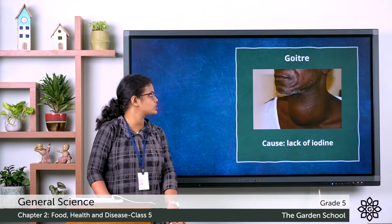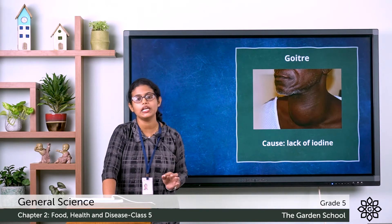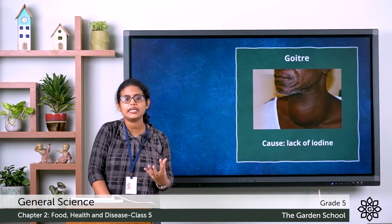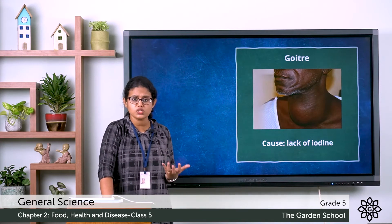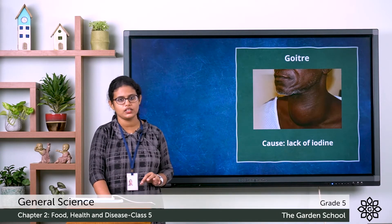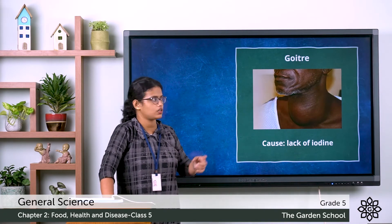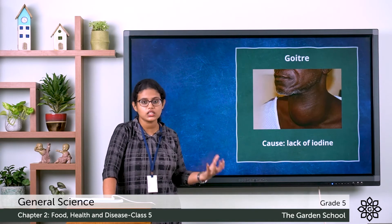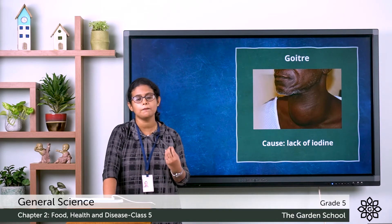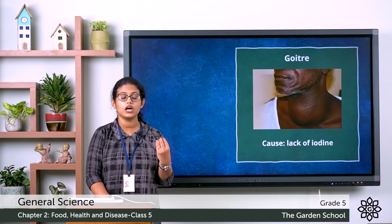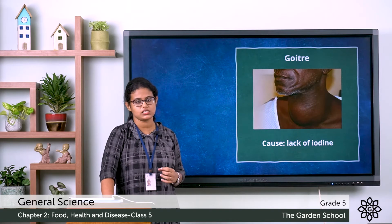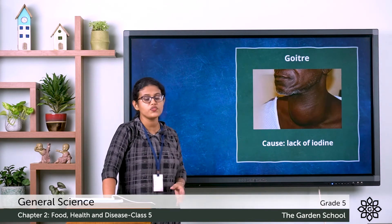The next deficiency disease is goiter — it is a swelling in the neck region caused by enlargement of the thyroid gland, a gland present in the neck. It is caused due to lack of iodine. You can see the swelling in the neck region in the picture. This disease can be cured by having a diet rich in seafood and iodized salt.